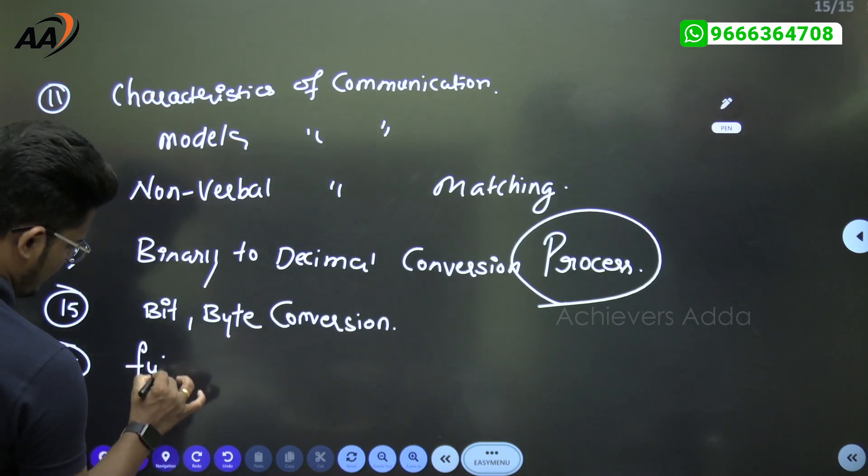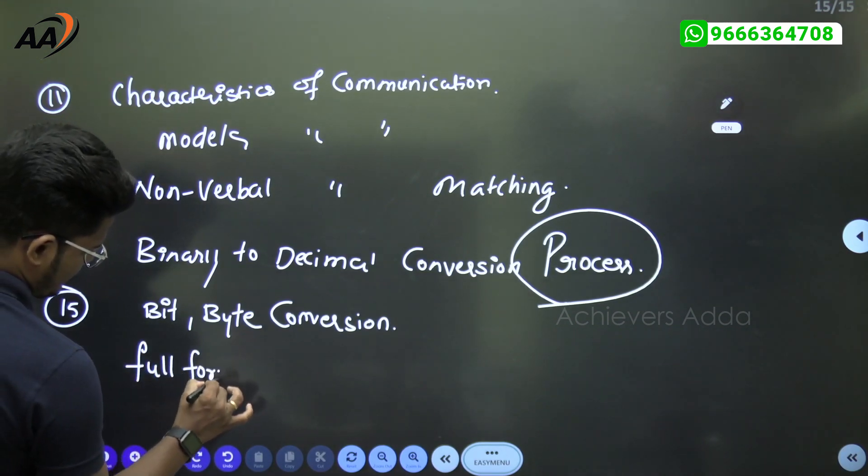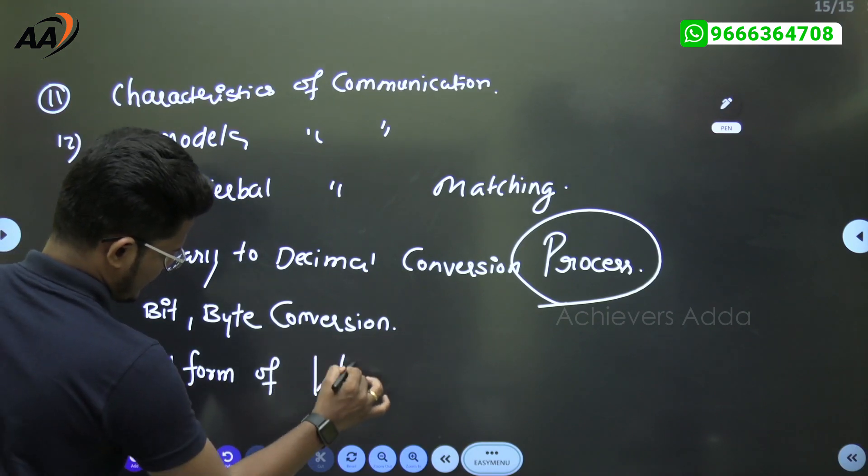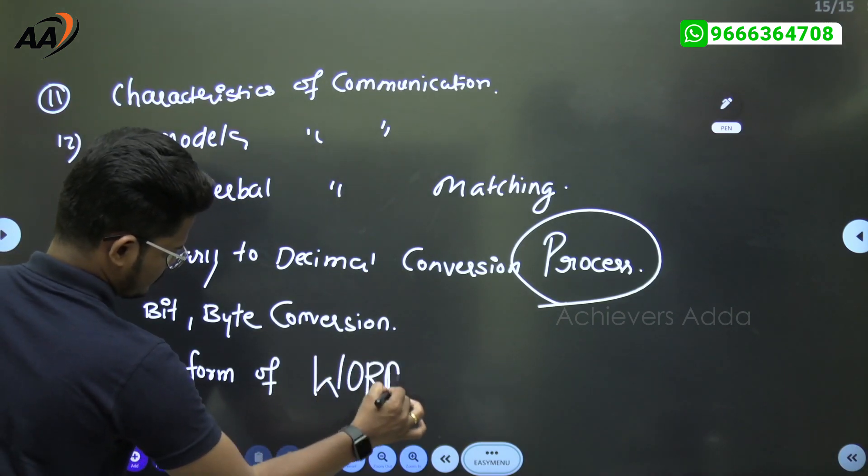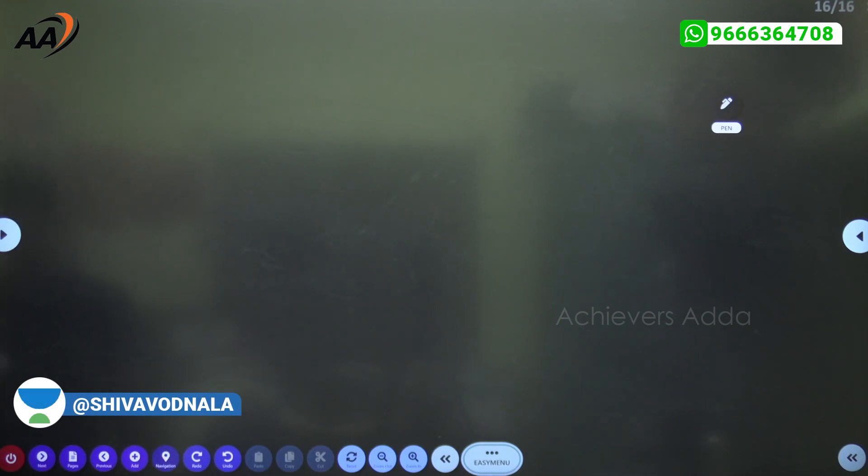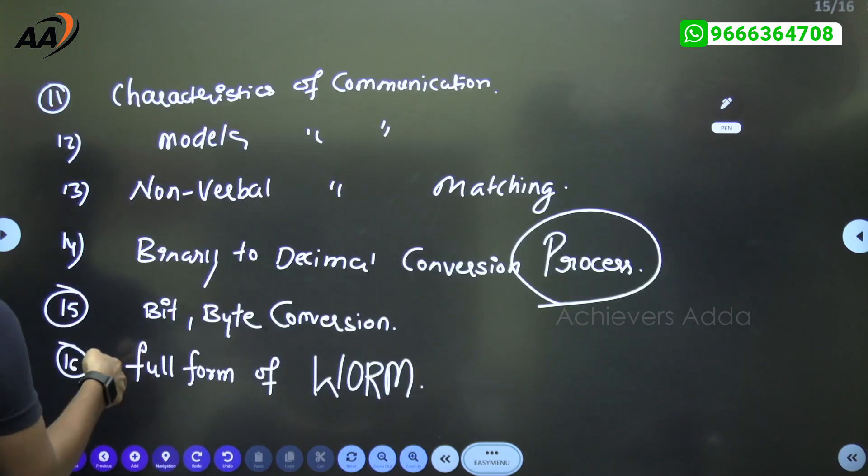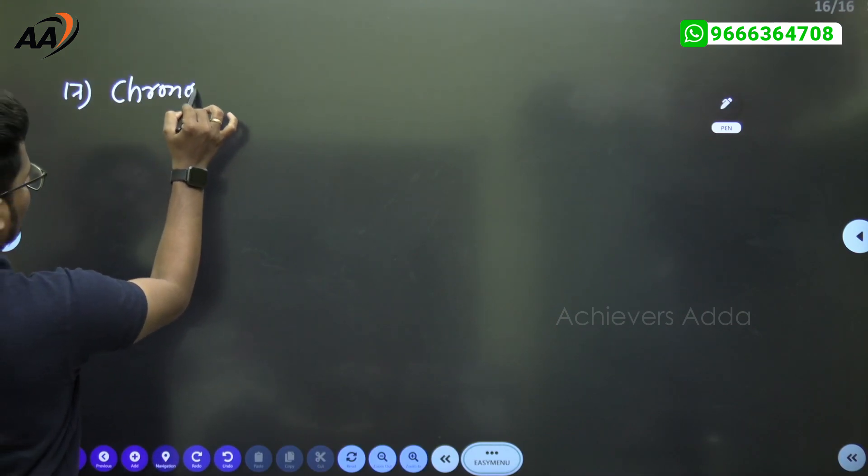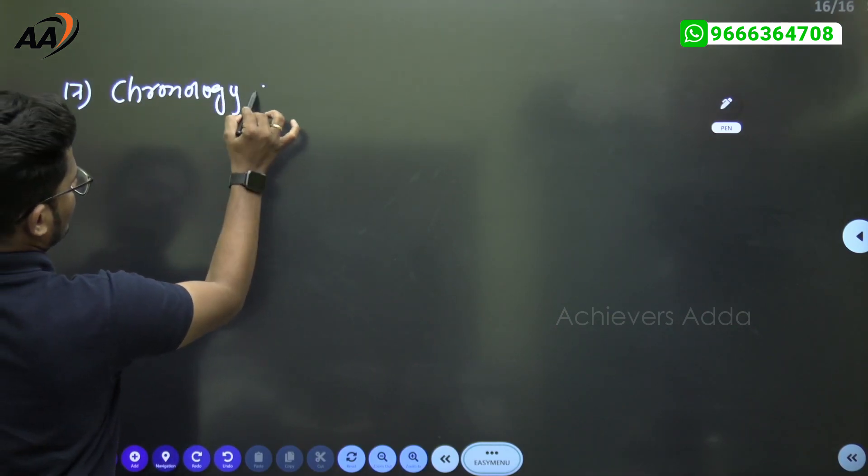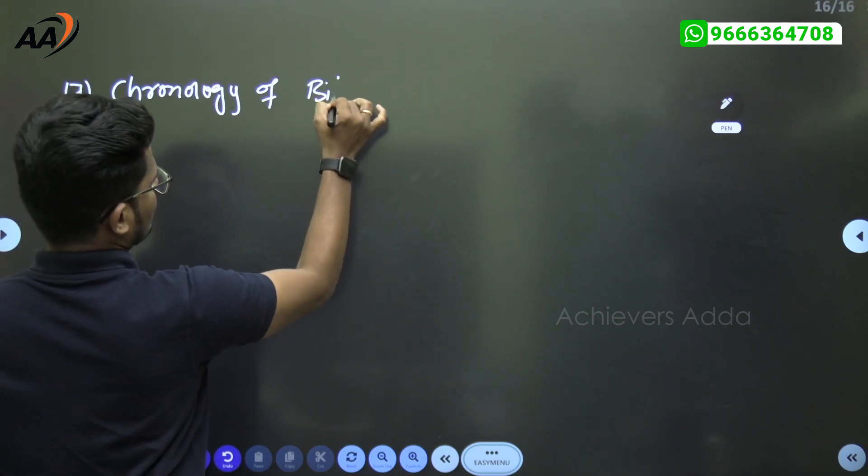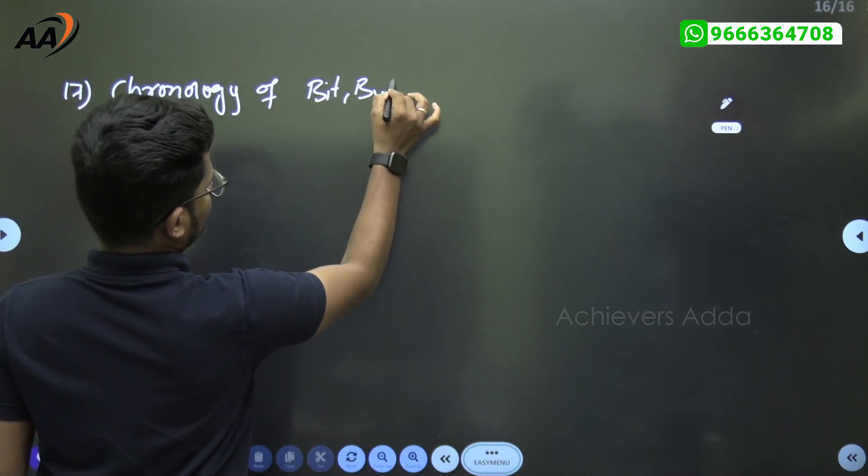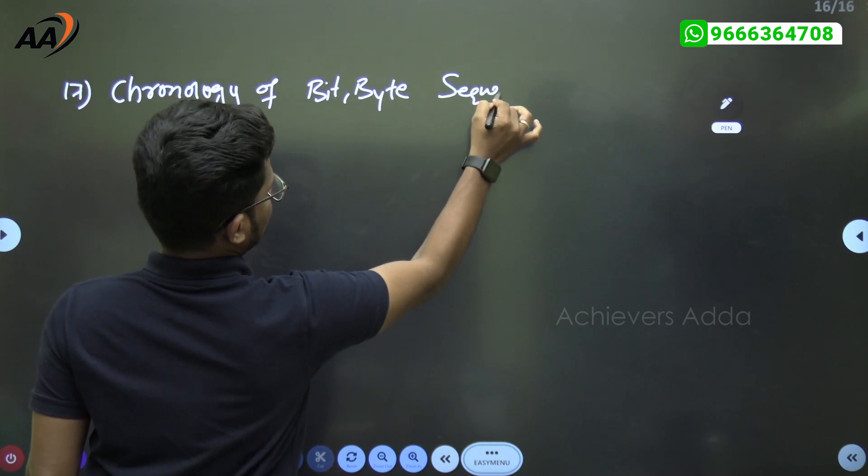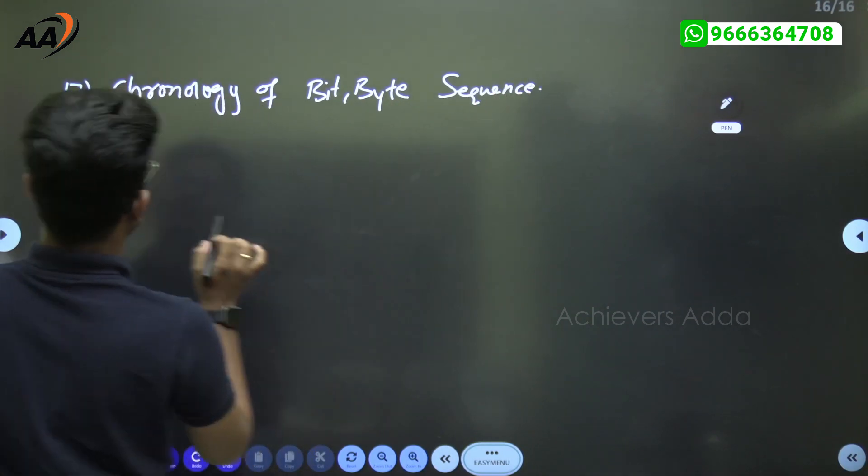Full form of the worm. Next is chronology of memory - that is bit, byte, the sequence. Chronology means sequence.